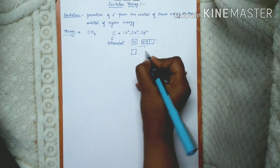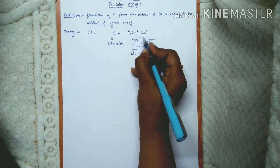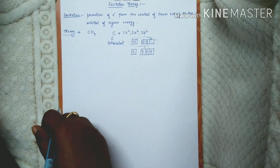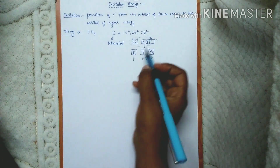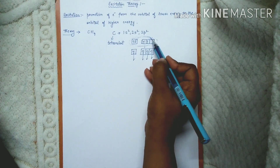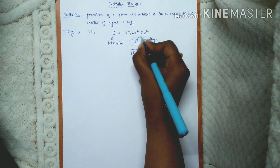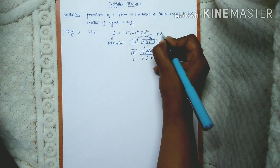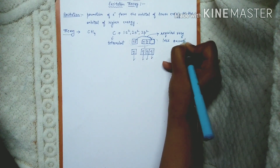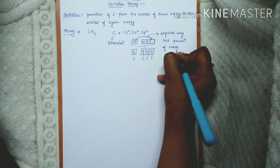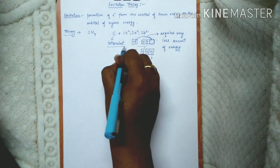But actually carbon forms four bonds - it is tetravalent. So carbon can form only two bonds based on its ground state, but how is it tetravalent? We say that one electron is excited and goes to a higher orbital, and then it forms four bonds. That is why carbon is tetravalent. The excitation requires very less energy, which is why the electron goes to that orbital and carbon forms four bonds and is tetravalent in nature.